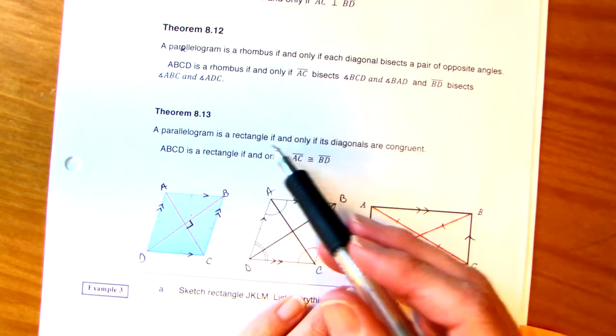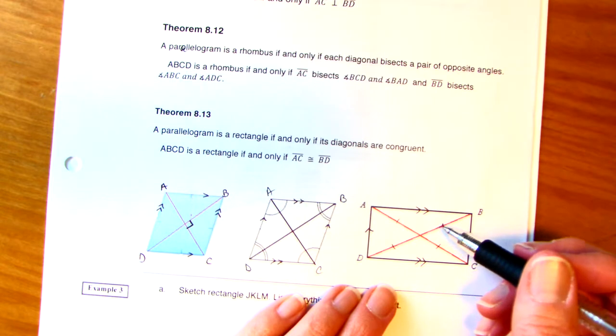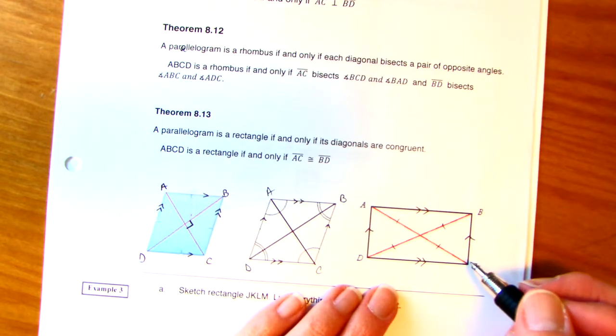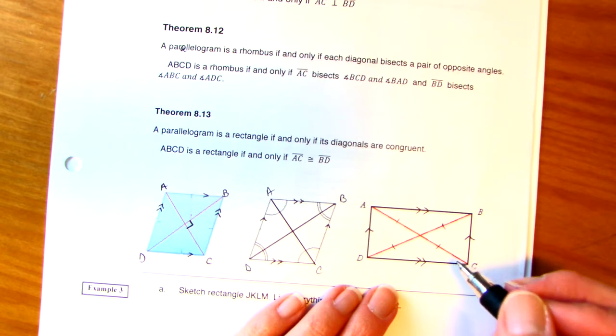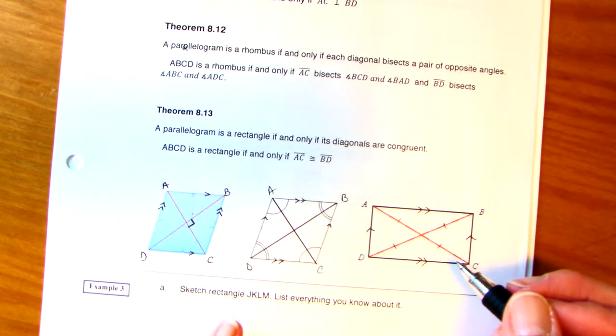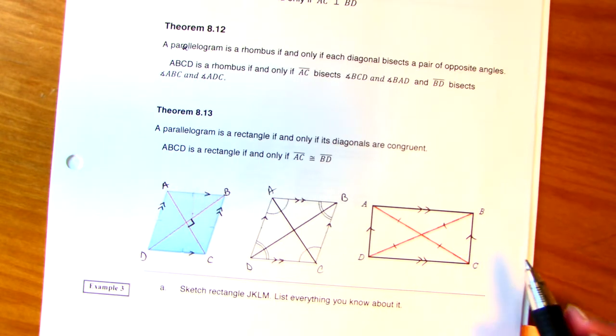And last but not least, a parallelogram is a rectangle. So we have two rhombus. So a rectangle, if and only if the diagonals are congruent. This whole length is congruent to that whole length. That's going to happen with a rectangle and a square, but not a rhombus. Remember, rhombus is slanted, so you can have one slant that's bigger than the other, or one diagonal bigger than the other.